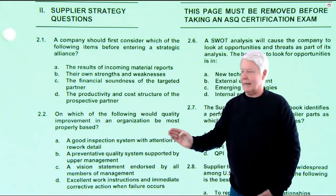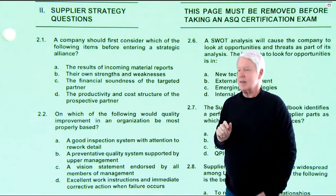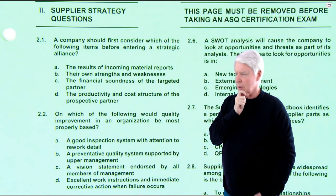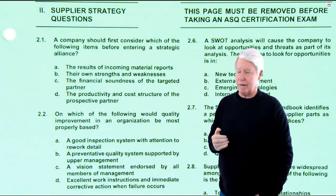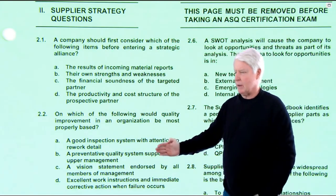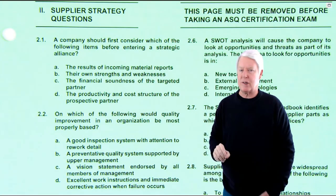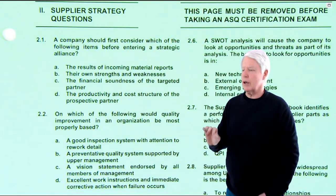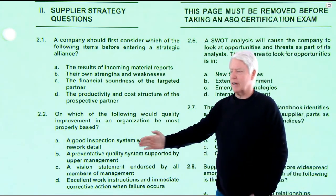Question 2.2: On which of the following would quality improvement in an organization be most properly based? I think it could be customer-based, since that's one of ASQ's core value systems. Looking at the choices: a good inspection system — no, ASQ doesn't like solving problems by inspection. They think you should design quality into the product and reduce variability so much that you get rid of inspection. Inspection is kind of a curse word to ASQ.